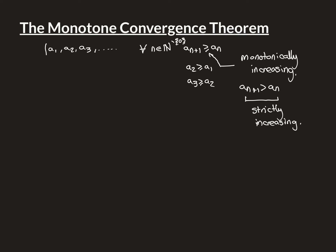A simple example of a monotonically increasing sequence is a_n = n, giving the sequence 1, 2, 3, 4, 5, and so on. This is actually a strictly increasing sequence, but all strictly increasing sequences are monotonically increasing. Each successive term is bigger than the previous one.